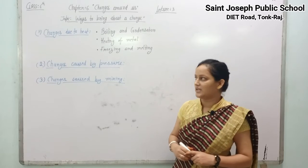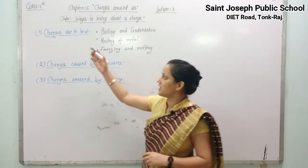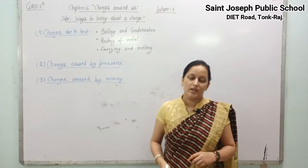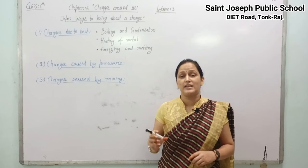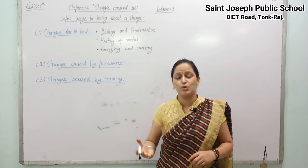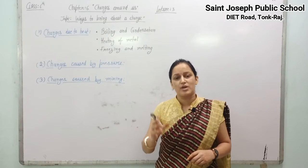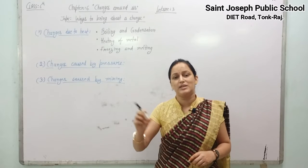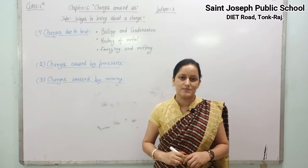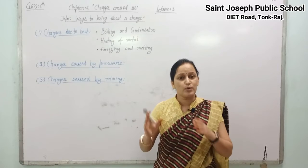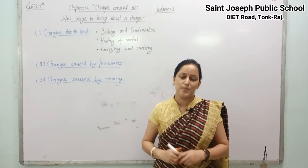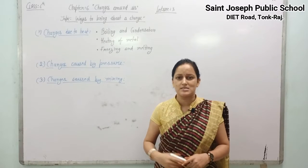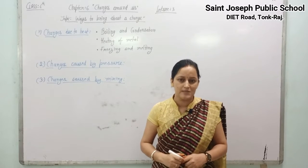So basically there are three ways by which changes can be brought in substances. The first way is changes due to heat. Heat plays a major role to transform objects into different ones. To understand that, let's discuss some examples.